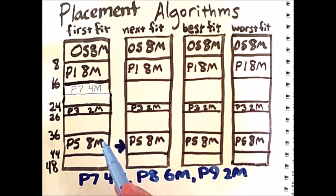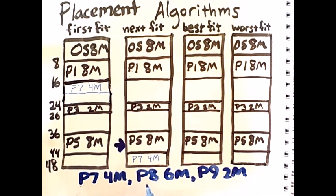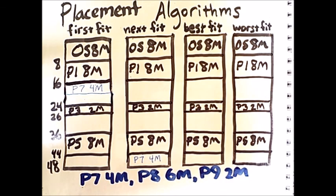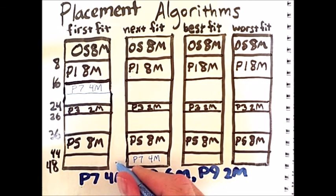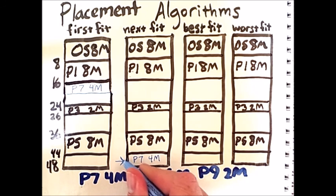In contrast, next fit will place process 7 here, because this is the first empty slot of memory that is big enough to hold process 7. After placement of process 7, the algorithm must note that this is now the last placement that occurred into memory.